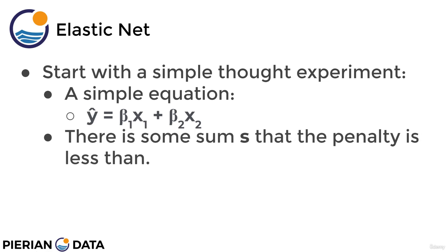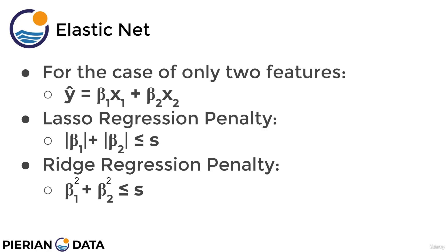Specifically, for some set of features there's going to be some sum s that the penalty is less than. For the case of only two features, lasso regression means you're going to minimize RSS subject to |β₁| + |β₂| ≤ s. Same for ridge regression: you're going to minimize residual sum of squares, however you're subject to β₁² + β₂² ≤ s.